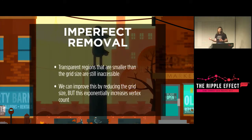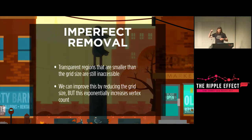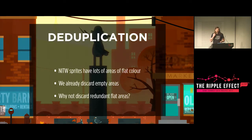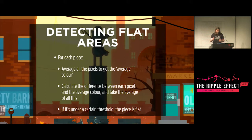We have some imperfect removal because any transparent area smaller than the grid size is still inaccessible. We can improve by making our grid finer, but that increases vertex count exponentially and we get diminishing returns due to atlas margins. Once we've divided up our pieces, we perform a deduplication pass. In Night in the Woods, most sprites have a lot of flat color. We already discard empty areas — why not also merge areas that are the same color? We average all the pixels in a piece to get the average color, take the difference between each pixel and that average, and if the total difference is within a certain threshold, we consider that piece a flat color.